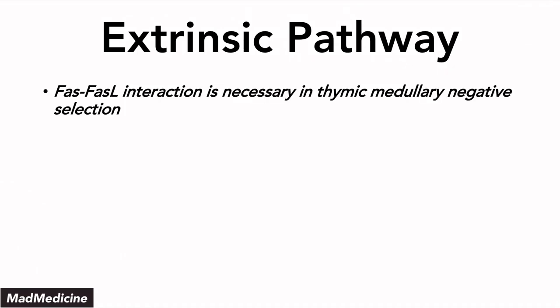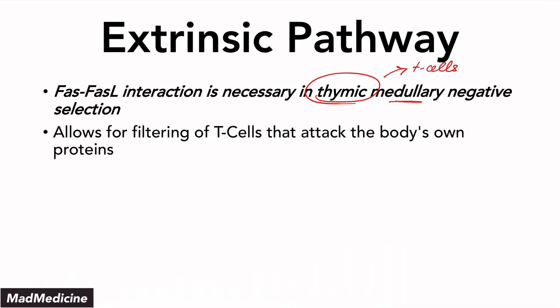You need to understand that the FAS and FAS-ligand interaction is very important for medullary negative selection in the thymus. T cells mature in the thymus, and you need mechanisms to ensure they recognize antigens properly and distinguish self from foreign antigens. The extrinsic pathway allows T cells to be filtered so they don't attack our own body's proteins. If a T cell binds to a self-antigen in the thymic medulla, it is likely to attack our own body — leading to autoimmune conditions — so it must be eliminated.